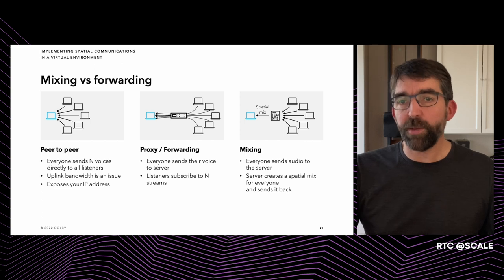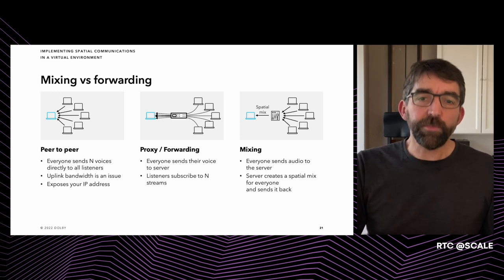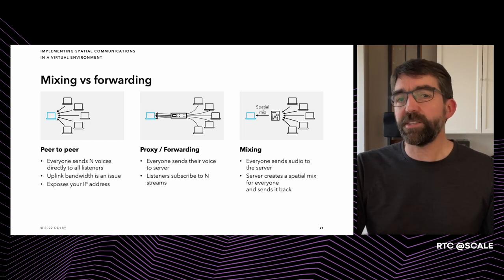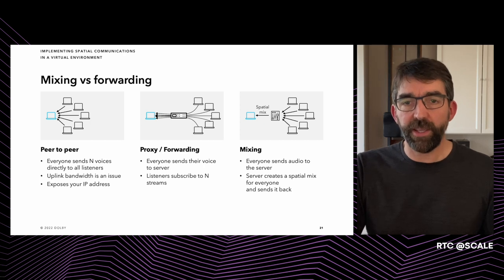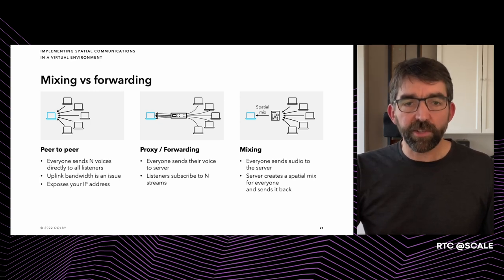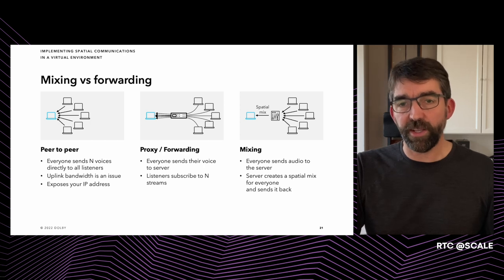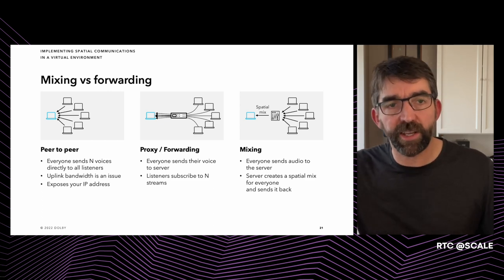Using a forwarding server solves the upstream bandwidth and IP address issues of peer-to-peer. Each user sends their real-time voice to a server, and listeners subscribe to the streams they want to hear. However, this may not scale well if you have a lot of people within your hearing range — you'd need to receive an audio stream from each person you can hear. A hacked client could also eavesdrop on someone at the edge of your hearing range. The other solution is mixing: each client sends an audio stream to the server, the server does a spatial mix for each listener and sends it back. This is the most complex solution, but allows for long hearing ranges and dense audio scenes even on consumer devices. This is the solution we use for our large-scale implementations.